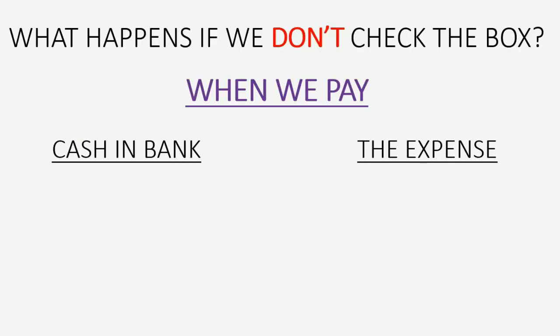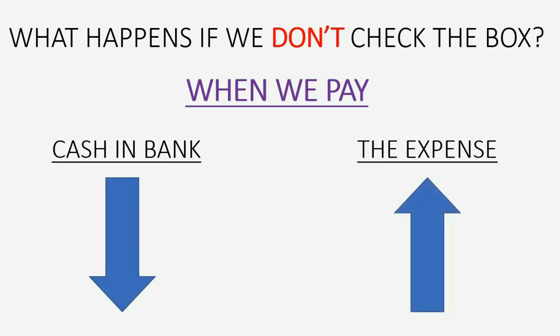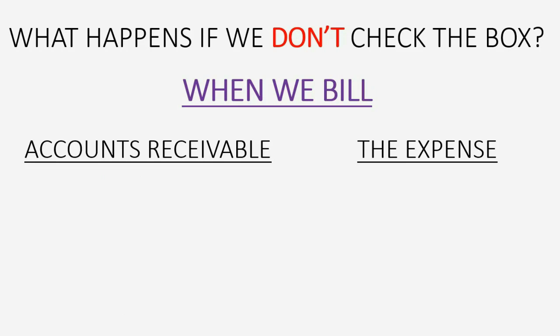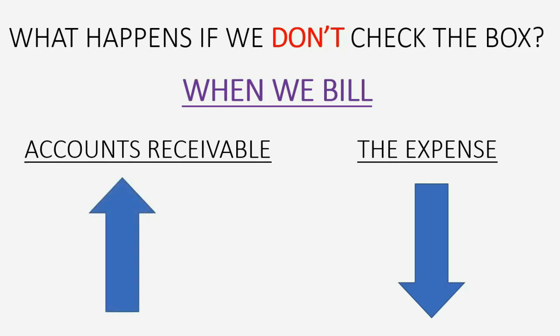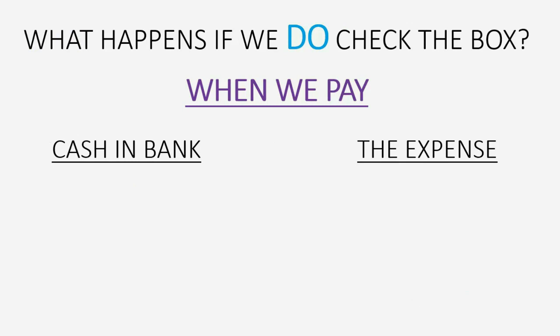If we don't check the box and leave it the way we've been doing, then at the moment we pay for a billable expense, cash goes down because we just paid, and the expense goes up just like paying a normal expense. At the moment we bill it, the expense goes down because the client is now assuming responsibility for it when we place it on an invoice. Accounts receivable goes up by the amount that we bill the client.